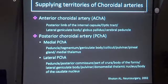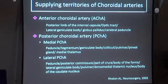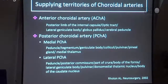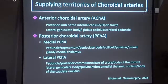The lateral posterior choroidal artery supplies the peduncle, posterior commissure, part of the crural region, body of the fornix, lateral geniculate body, pulvinar, dorsomedial thalamic nucleus, and body of the caudate nucleus.